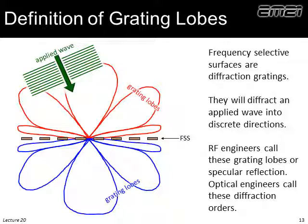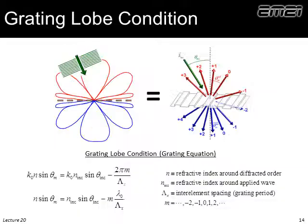Microwave and radio frequency engineers call these grating lobes, but it's the exact same concept. Suddenly the period of the frequency selective surface is large enough to diffract the ray into multiple orders — those are called grating lobes. The analogy between grating lobes and diffraction is important: it's the same math, the same theory. What a radio frequency microwave person calls a grating lobe, optics people call diffraction orders or spatial harmonics.